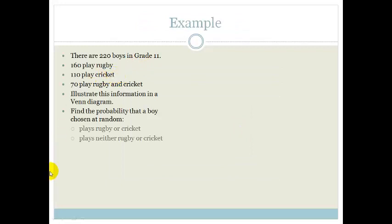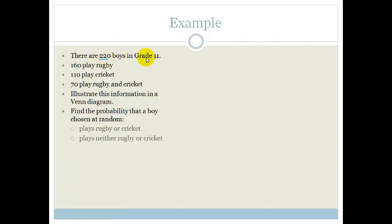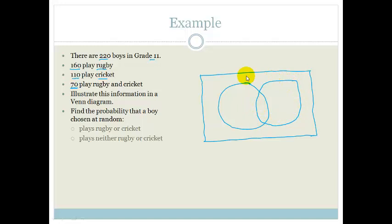So let's do an example. It says there are 220 boys in grade 11, 160 play rugby, 110 play cricket, and 70 play rugby and cricket. So first of all, it says illustrate this information in a Venn diagram. So I'm going to draw a big square or rectangle, because that's going to be for my sample space. And then I'm going to draw a circle, another circle. And I'm going to call this circle rugby, and this circle cricket.